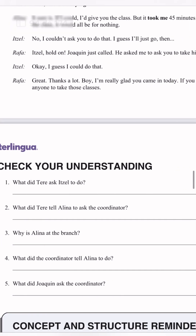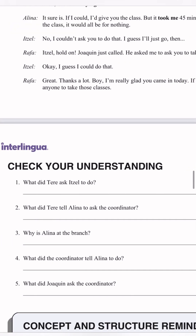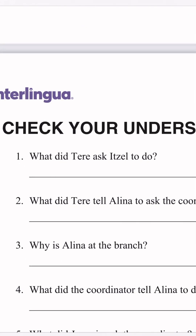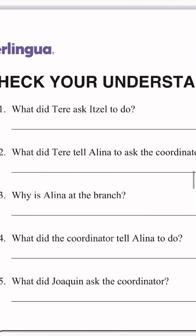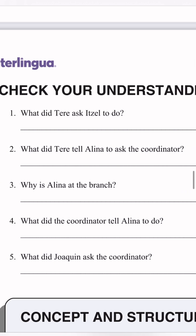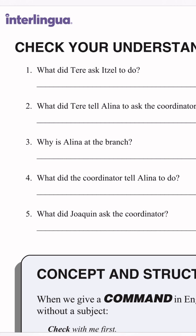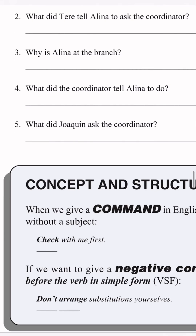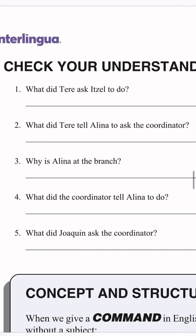We have here a check-your-understanding section with five questions. Question one: what did Tere ask Itzel to do? Question two: what did Tere tell Alina to ask the coordinator? Question three: why is Alina at the branch? Question four: what did the coordinator tell Alina to do? And question five: what did Joaquin ask the coordinator?